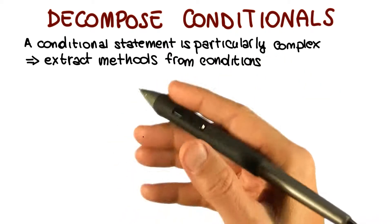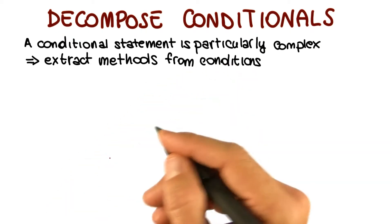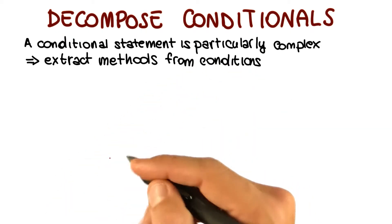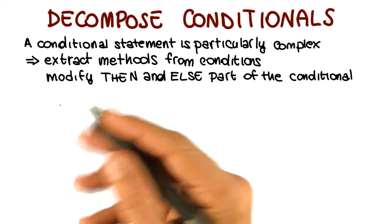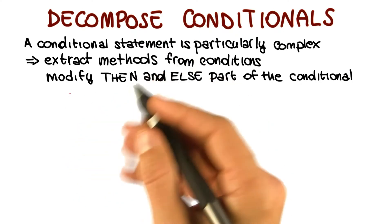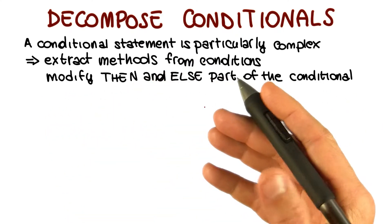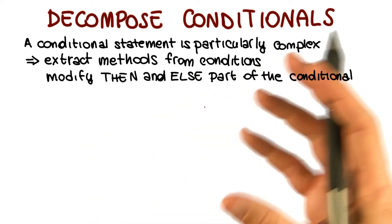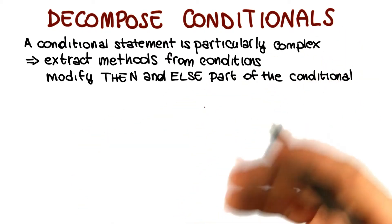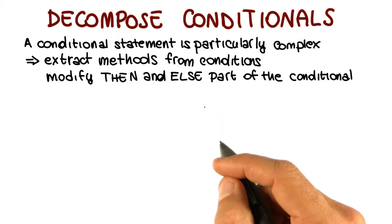And if you give the right name to the method, as we saw in the last example, that can make the code much clearer and much easier to understand. In addition here, you can also do something else. Let's assume that also the then and else part of the conditional are complex. We can do the same thing with them. We can modify the then and else part of the conditional by extracting the corresponding code, making also that one into a method, suitably naming the method and then having the call to the method only in the then and else part of the conditional statement.